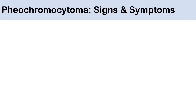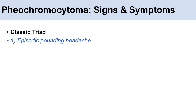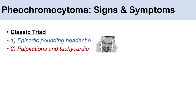The classic triad of pheochromocytoma includes: one, episodic pounding headache; two, palpitations and tachycardia; and three, diaphoresis. Those are the classic triad symptoms to remember.